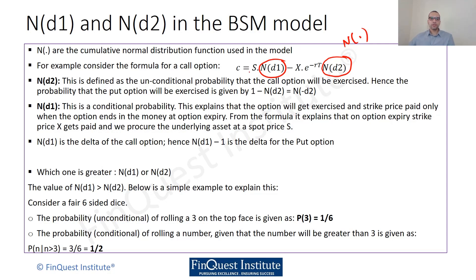Let's take the formula for a call option. We had c = S·N(d1) - X·e^(-rT)·N(d2), where S is the spot price, X is the strike price, R is the risk-free rate of interest, T is the time to maturity, and we have the d1 and d2 terms. Let's try to understand the interpretation of N(d1) and N(d2) in this case.